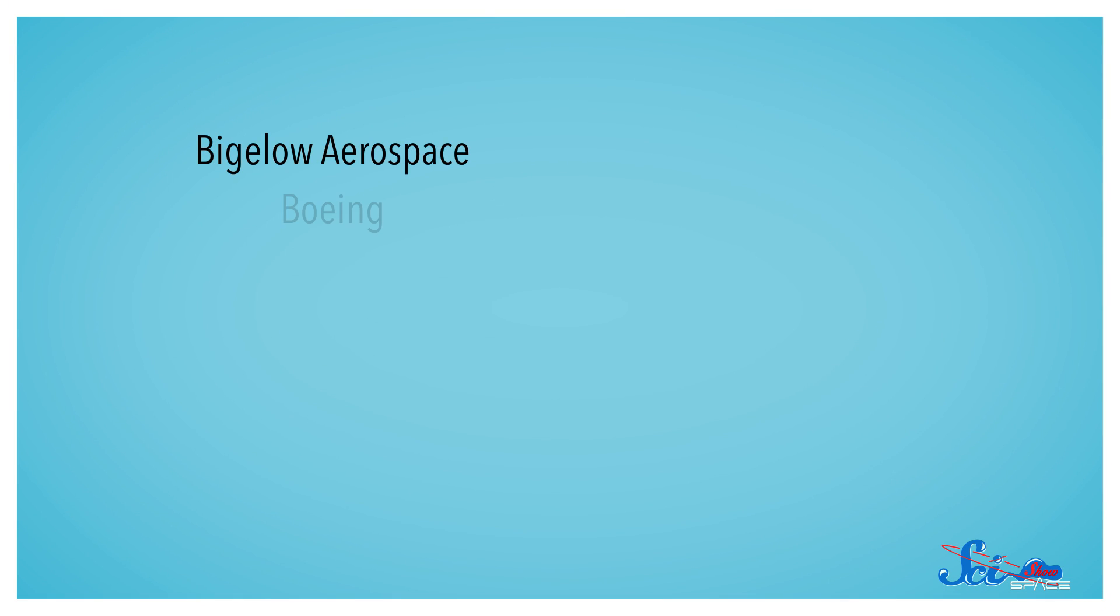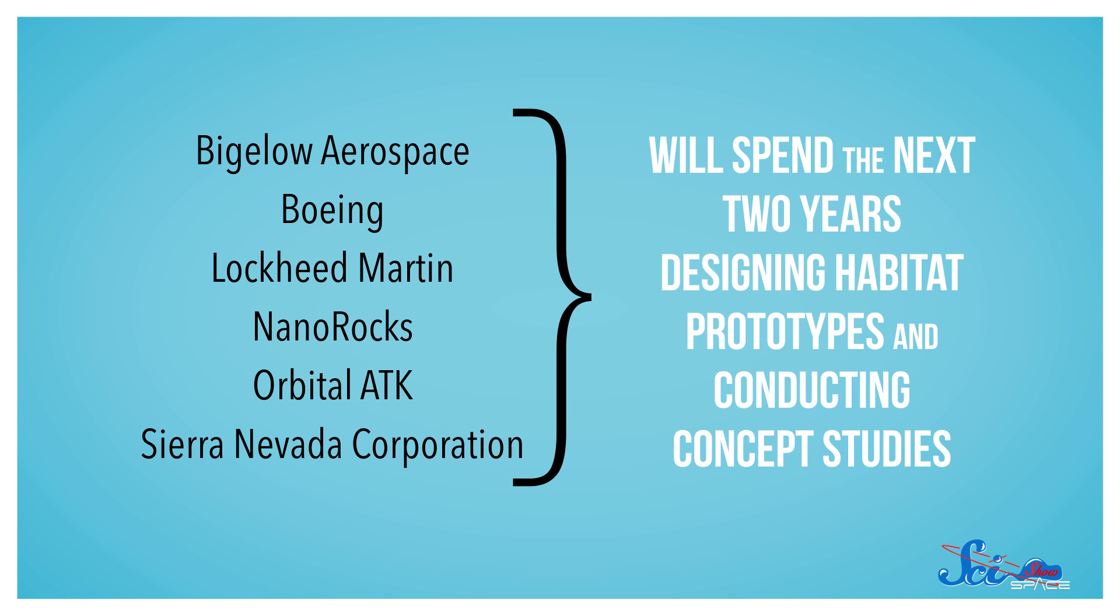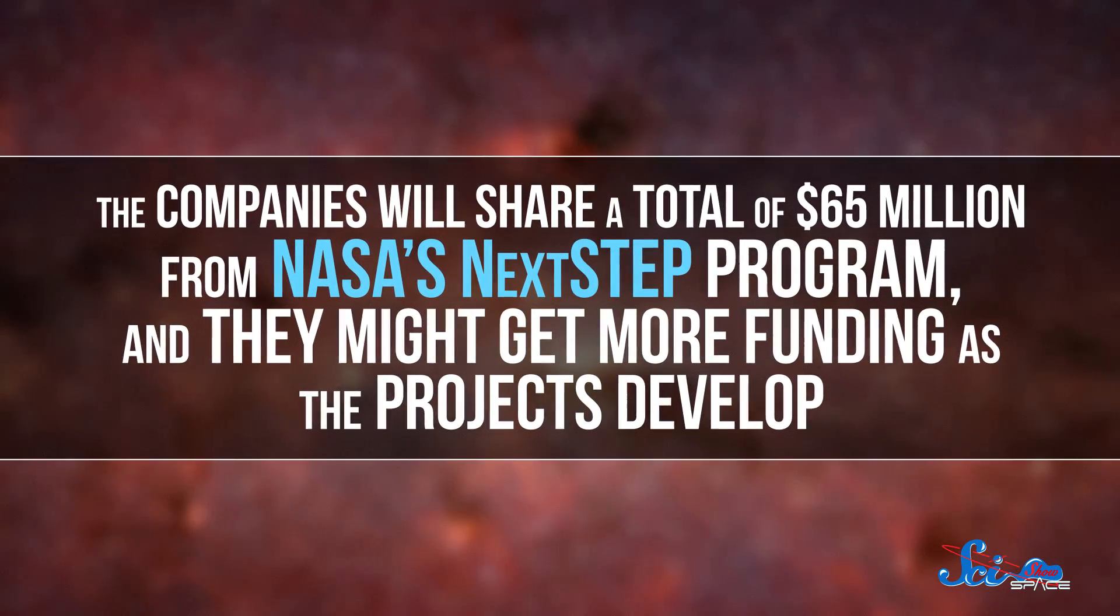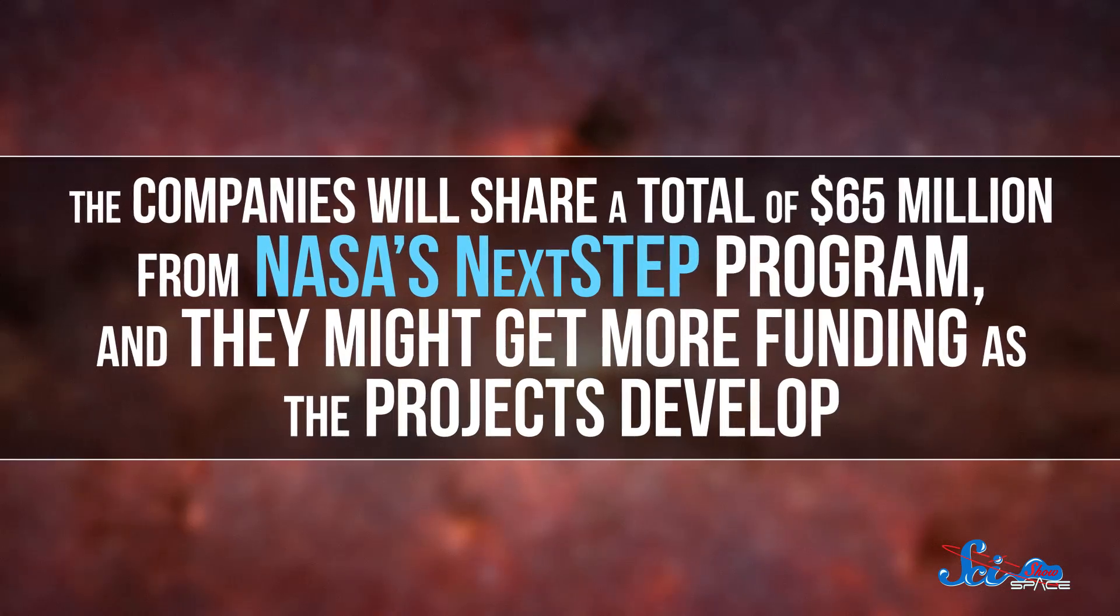The six companies, Bigelow Aerospace, Boeing, Lockheed Martin, NanoRocks, Orbital ATK, and the Sierra Nevada Corporation, will spend the next two years designing habitat prototypes and conducting concept studies. The companies will share a total of $65 million from NASA's Next Step program, and they might get more funding as the projects develop.